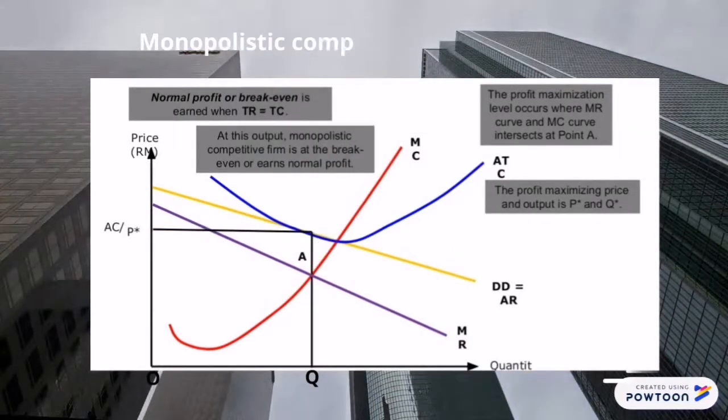Breakeven profit in the short run is earned when total revenue is equal to total cost, which also means that the firm earns zero profit. The profit maximization level occurs at point A where MC and MR intersect.